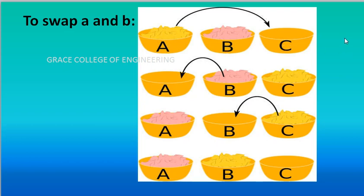What is a variable? A variable is used to store the values inside the computer — for storing purpose we use variables. Here, only two variables we want to swap. But here there is a third variable C — that is a temporary variable. By using the temporary variable, we are going to swap the values.